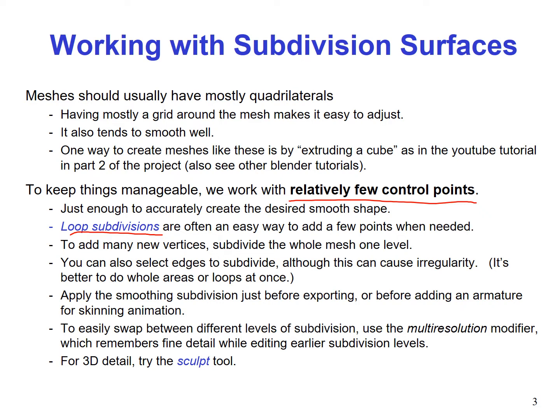Loop subdivisions are often an easy way to add a few points when needed. To add many new vertices, subdivide the whole mesh one level. You can also select edges to subdivide, although this can cause irregularity, so it is often better to do the whole area or loops at once. Apply smoothing subdivision just before exporting or before adding an armature for skinning animation. To easily swap between different levels of subdivision, use the multi-resolution modifier, which remembers fine detail while editing earlier subdivision levels.